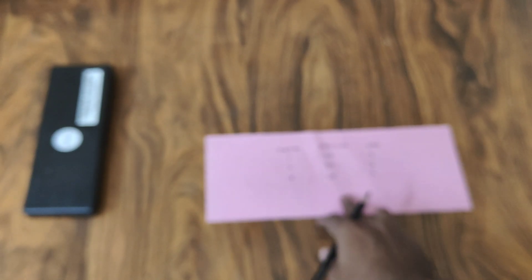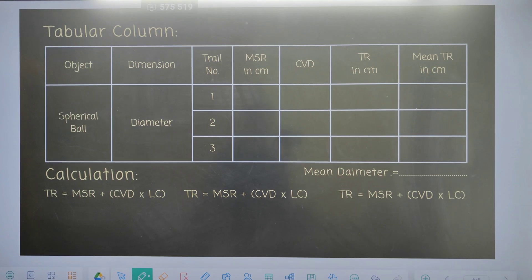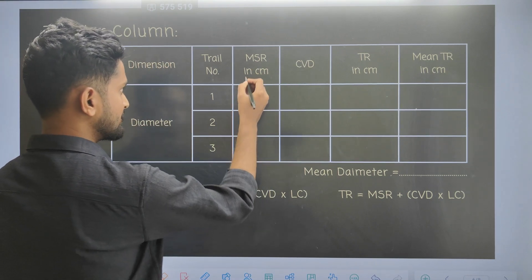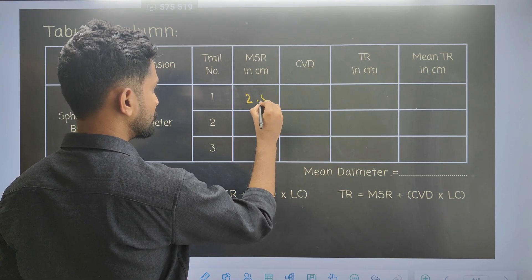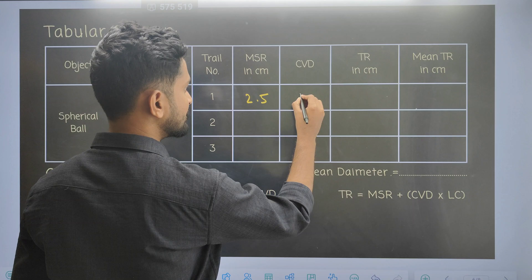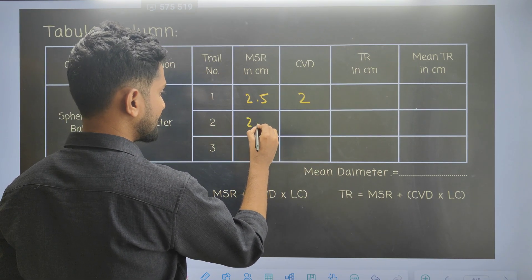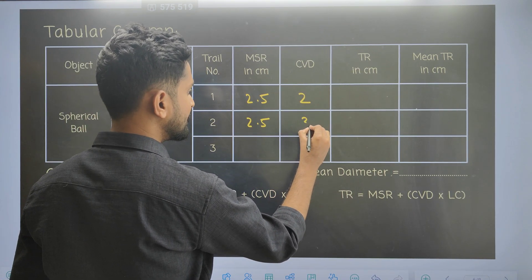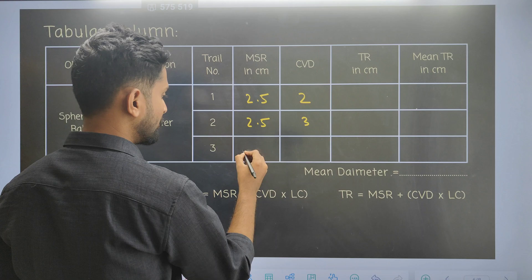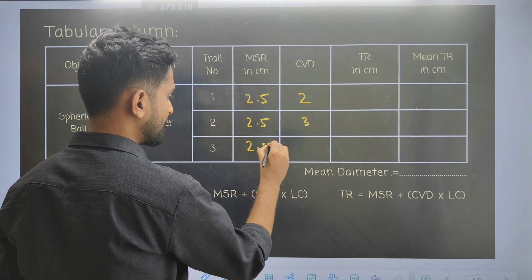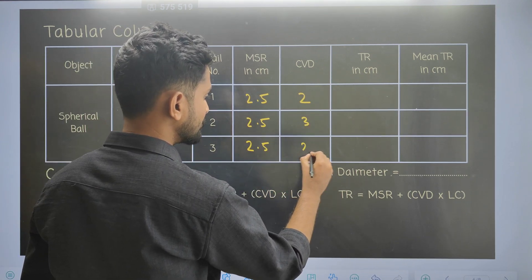For trial 3, the experiment is repeated again with the object repositioned. The main scale reading is again 2.5 cm and CVD is 2. Now we tabulate these values: trial 1 — MSR = 2.5 cm, CVD = 2; trial 2 — MSR = 2.5 cm, CVD = 3; trial 3 — MSR = 2.5 cm, CVD = 2.